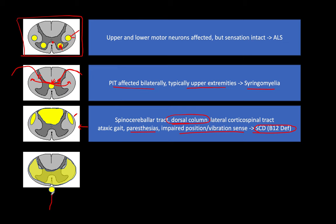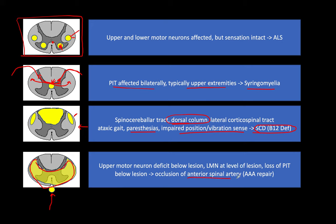Here we have a lesion outside the spinal cord causing loss of the anterior portion — everything except the dorsal column is affected: motor and lateral tracts. This is due to occlusion of the anterior spinal artery. The anterior spinal artery can be damaged when repairing an abdominal aortic aneurysm (triple-A), causing upper motor neuron deficits below the lesion as upper motor neurons can't reach their target.